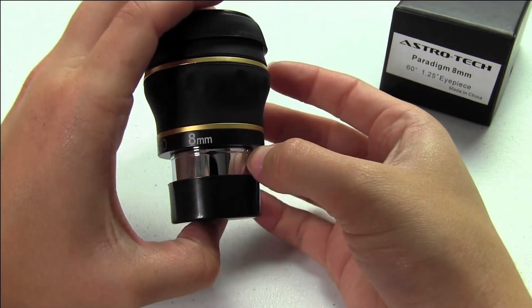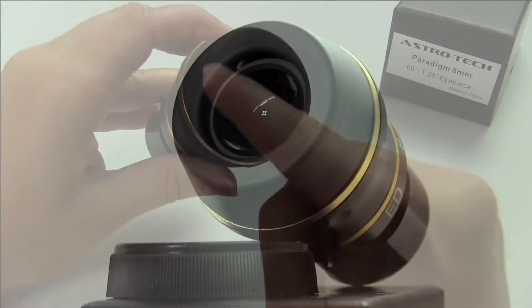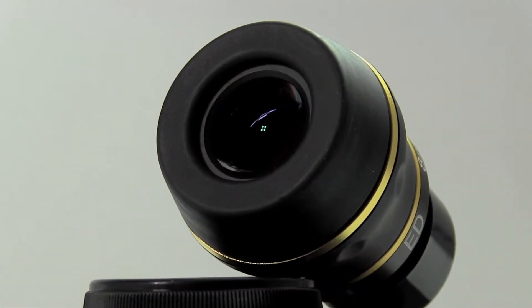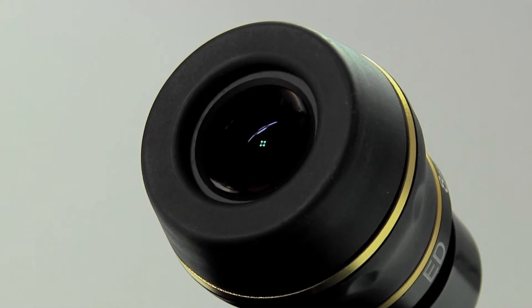It has a rubberized body to help with any sort of dents and dings, and a rather large eye lens, unlike some of the older eyepieces you'll find with a pinhole. You're not having to really search for that here.